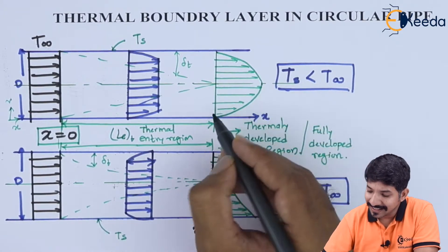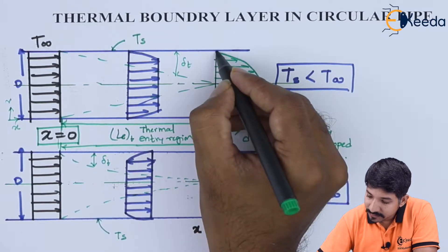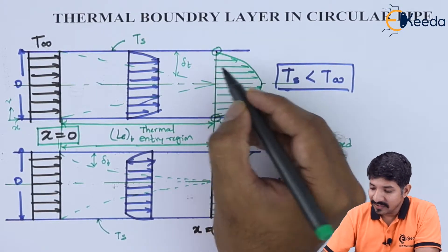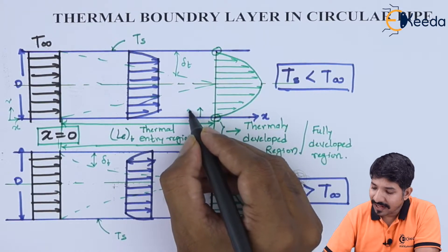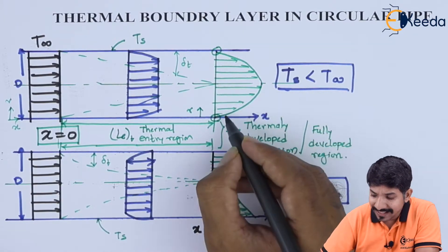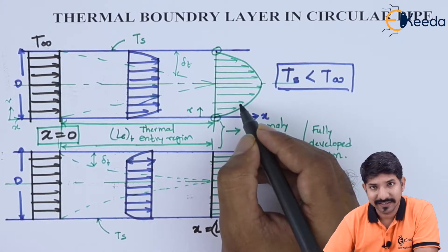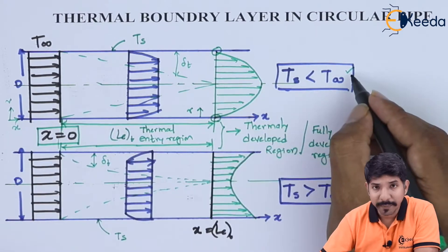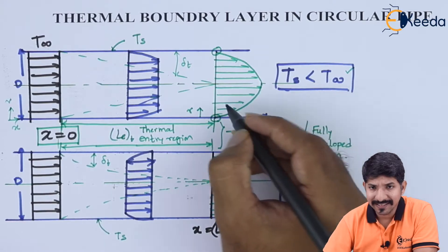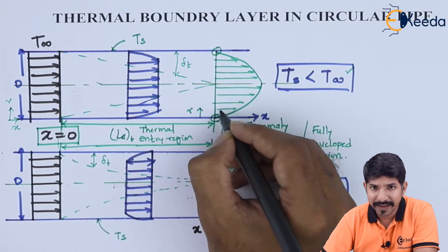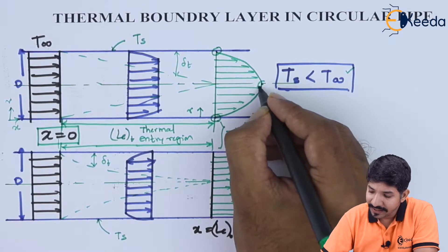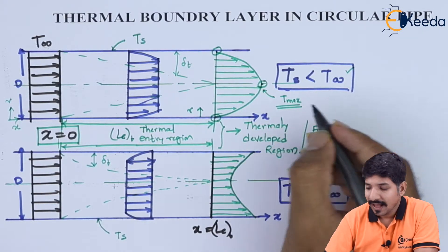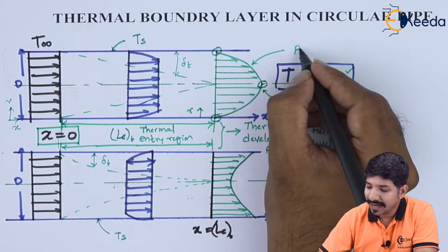At the wall of the pipe, the temperature of the fluid will be the same as the temperature of the surface. As we move inward in the r direction, the temperature keeps increasing, because the fluid temperature is higher than the surface temperature. There will be a point where we have a maximum temperature, T_max, and the profile is a parabolic profile.